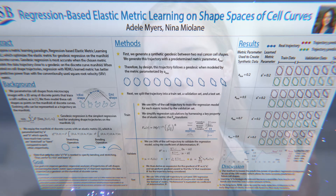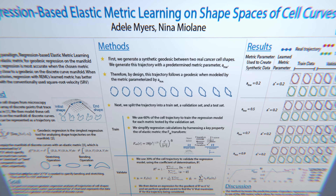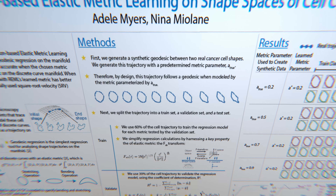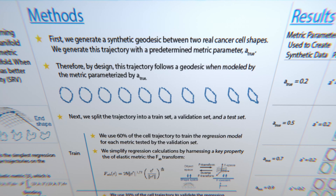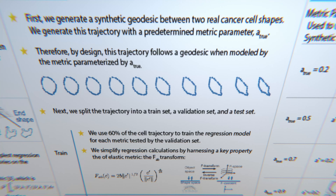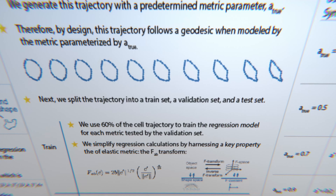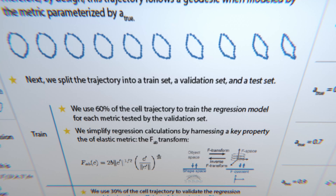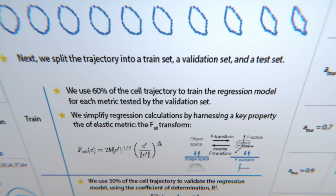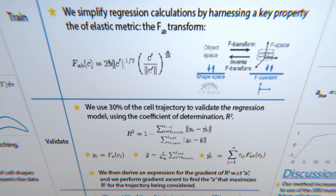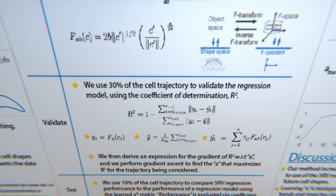Cells evolve over time, and as they evolve, they often change in shape — so the shape of the cell membrane will change over time. We wanted to look more closely at this problem, specifically at cell migration, because cell migration is essential to a lot of things in life. So we wanted to find the best way to quantify changes in cell shape over time.